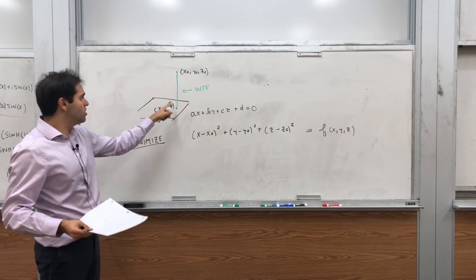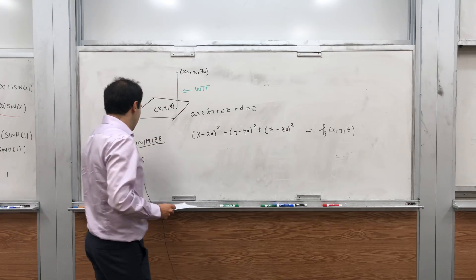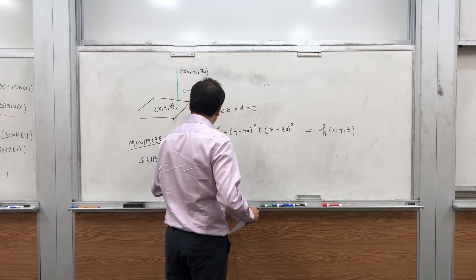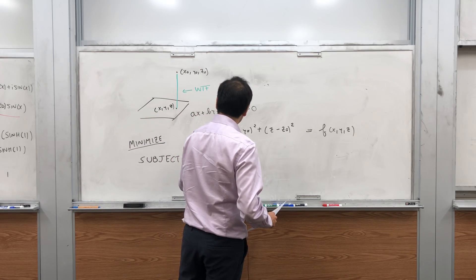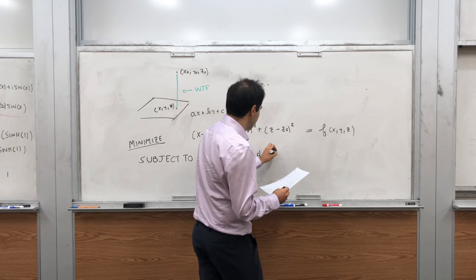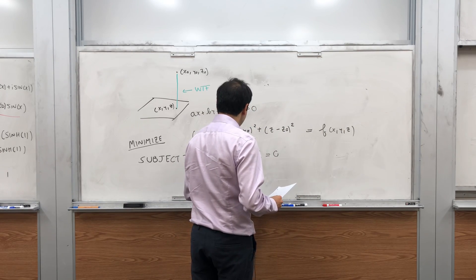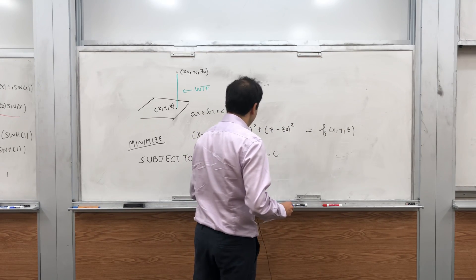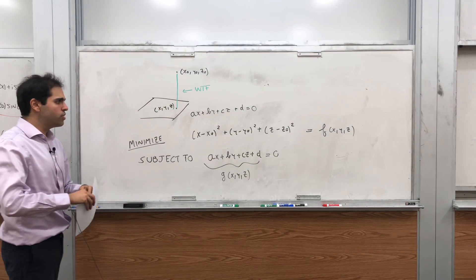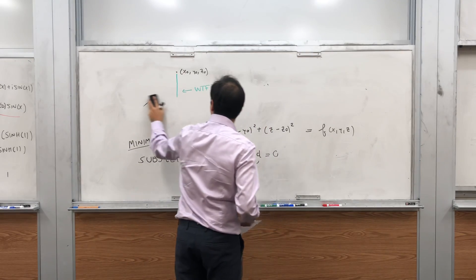What's our constraint? Well, the constraint is simply that x, y, and z lie in that plane. So the constraint is very easy in this case: subject to g(x, y, z) = Ax + By + Cz + D = 0. So we want to minimize a function subject to a constraint. The answer is, of course, Lagrange multipliers.